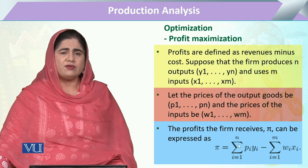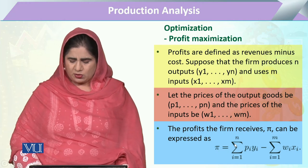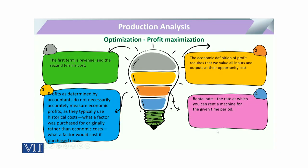The first term is revenue and the second term is cost. The economic definition of profit says that all inputs must be measured properly. When we say measurement, there is a possibility that certain inputs cannot be properly calculated because they are not marketed — meaning their market valuation is not possible.